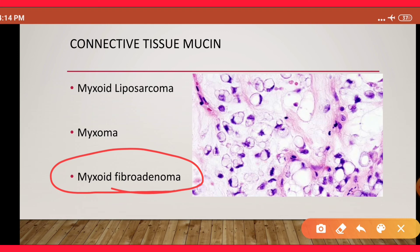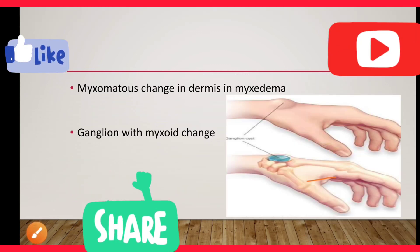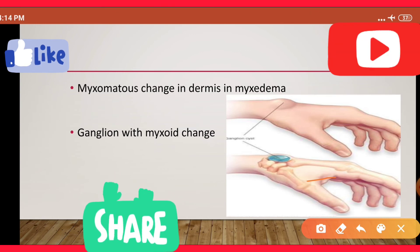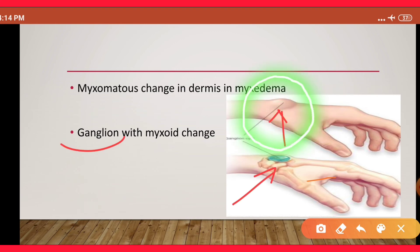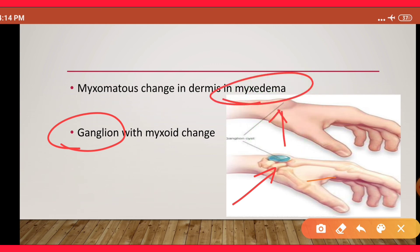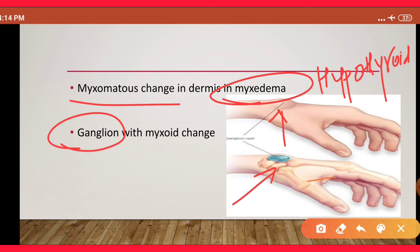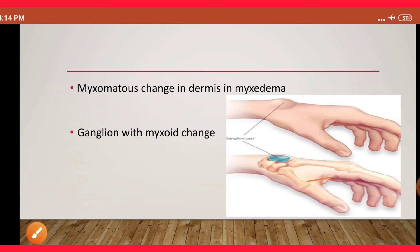Fibroadenoma is a benign breast tumor, but sometimes it can produce mucus, so myxoid change can be seen in that tumor. Another example of myxoid change is a simple ganglionic cyst over the wrist. Another example is myxedema, which is hypothyroidism, in which you can have myxomatous change in the dermis — on histopathology, myxoid change can be seen in the dermis.